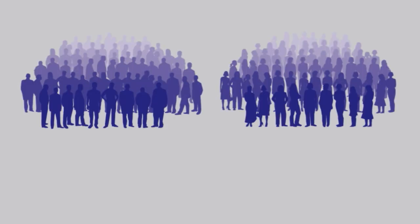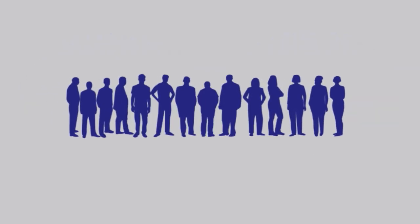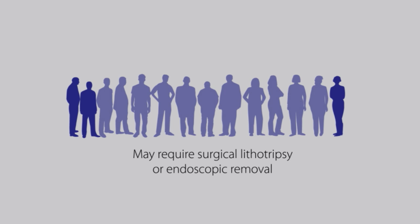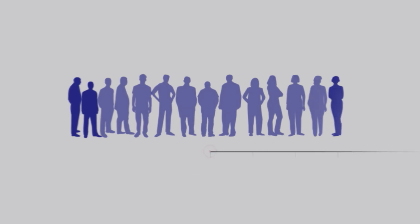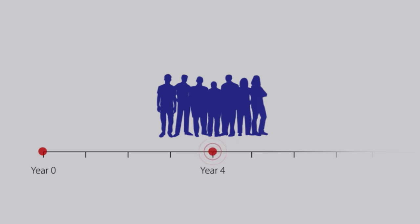In the U.S., it is estimated that 13% of men and 7% of women will develop a kidney stone during their lifetime. Fortunately, in about 78% of these patients, stones will be expelled spontaneously. But stones that become lodged in the ureter may require lithotripsy, or percutaneous or endoscopic removal. It's important to note that nearly half of all first-time stone formers will have another stone episode within the next four years. Recurrent stone formers are at even greater risk, and may form a new stone every two or three years.